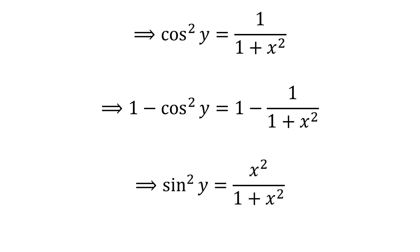By application of the famous identity, sine squared of y plus cosine squared of y is equal to 1. So, 1 minus cosine squared of y is equal to sine squared of y.